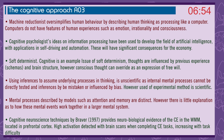Cognitive psychologists' ideas on information processing have been used to develop artificial intelligence, with applications in self-driving and automation, which will have significant consequences for the economy. Cognitive is an example of soft determinism — thoughts are influenced by previous experience, schemas, and brain structure, but conscious thought can override as an expression of free will. Using inferences to assume underlying processes is unscientific, as internal mental processes cannot be directly tested. However, the use of the experimental method is scientific. Cognitive neuroscience work by Braver provides neurobiological evidence of the central executive in the working memory model, located in the prefrontal cortex, with high activation on brain scans when completing central executive tasks, increasing with task difficulty.